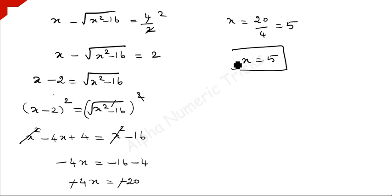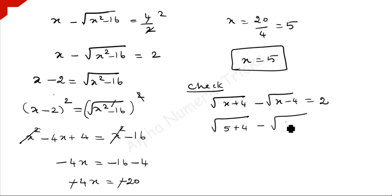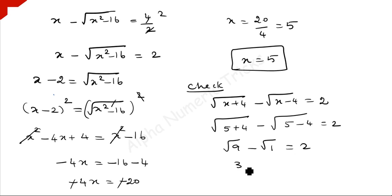So x equals 5 is our answer. Let's verify: substituting into the original problem, square root of 5 plus 4 minus square root of 5 minus 4 equals square root of 9 minus square root of 1 equals 3 minus 1 equals 2. Since 2 equals 2, the answer is confirmed. Therefore x equals 5 is the solution.